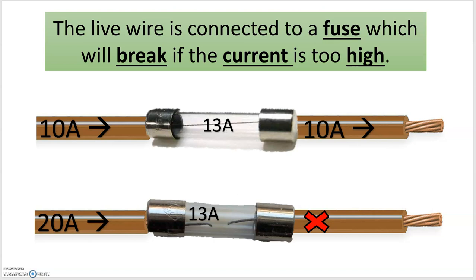If you have an appliance that has a current of 10 amps coming through, then you need to make sure you choose the appropriate fuse rating.